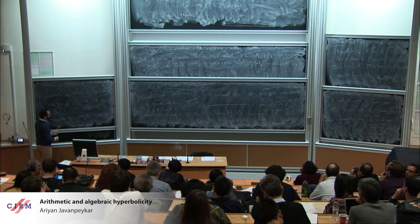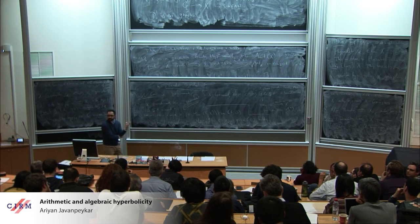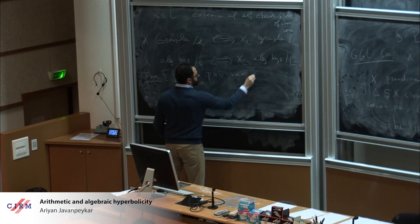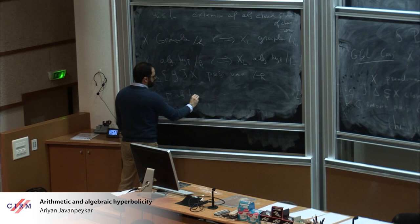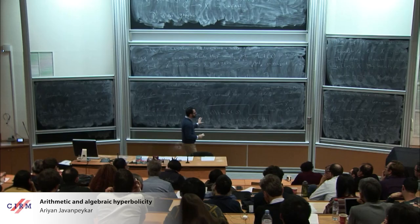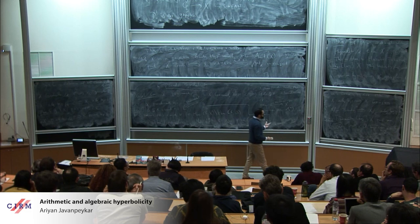A fun fact: pseudo-algebraic hyperbolicity, like general type, actually persists over field extensions. For a projective variety over k, if you're pseudo-algebraically hyperbolic over k, then you remain pseudo-algebraically hyperbolic over any field extension L, and the same holds for general type.